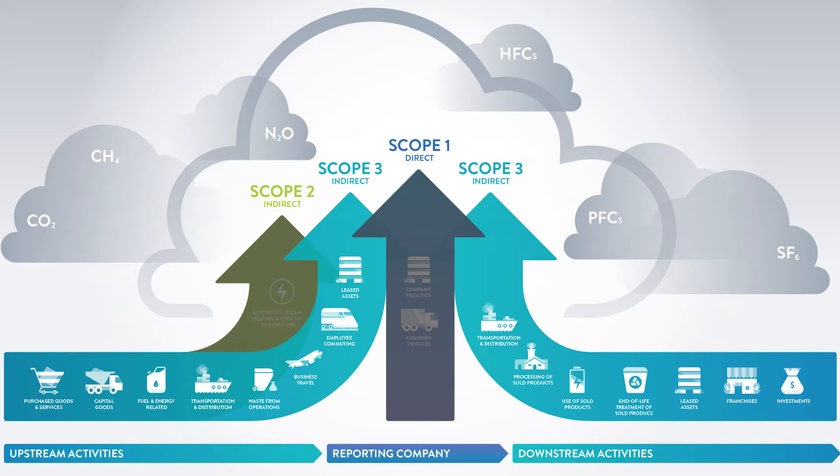These emissions are broken into 15 categories, including purchased goods and services, capital goods, and waste generation from operations, to name a few.